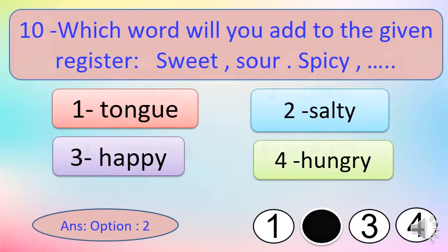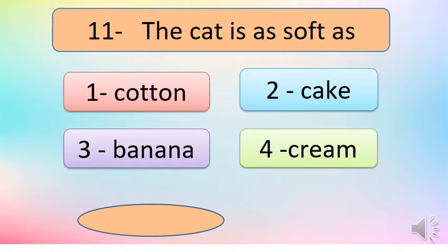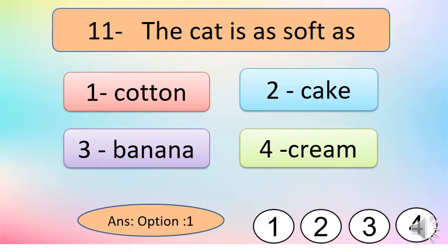Moving ahead — question number eleven: 'The cat is as soft as ___.' You have done similes in fifth standard — based on similar characteristics or qualities, we compare one thing to another. The cat is soft — as soft as what? Options are: number one — cotton; number two — cake; number three — banana; number four — cream. The right answer is option number one: the cat is as soft as cotton. Mark a dark circle on option number one.